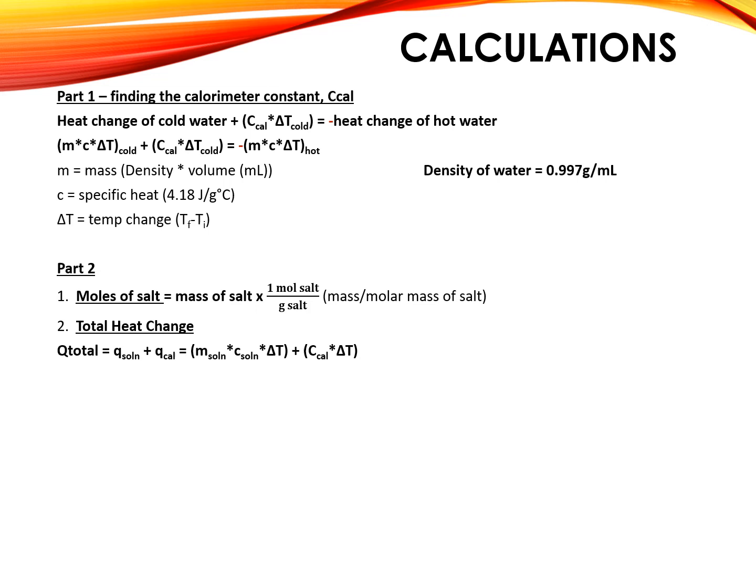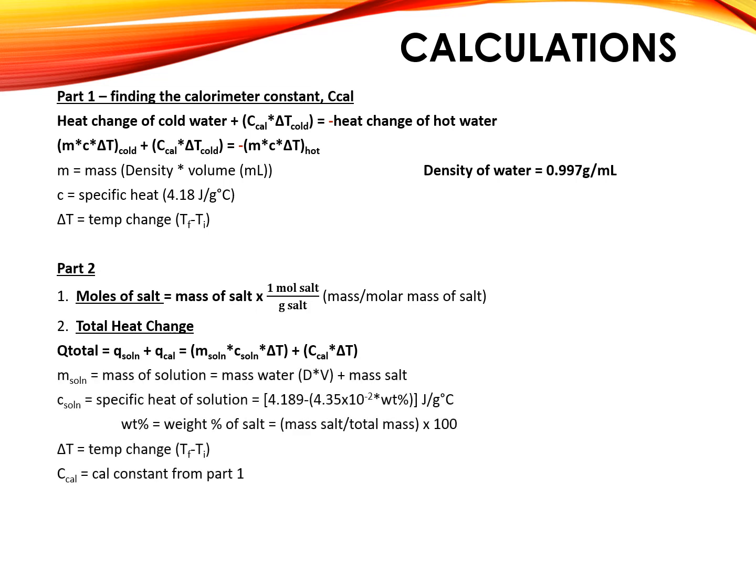For the calorimeter, that is C cal times delta T. We just found the calorimeter constant, and the change in temperature is the final minus initial temperature. The mass of the solution is the mass of water plus the mass of salt, which you get using the density of water again.